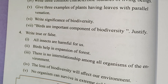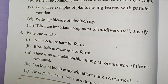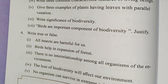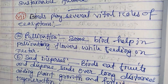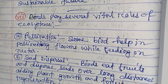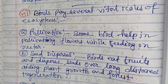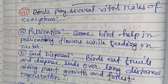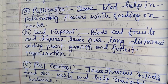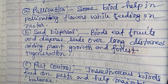Number seven: Birds are an important component of biodiversity. Birds play several vital roles in the ecosystem. Number one: Pollination — some birds help in pollinating flowers while feeding on nectar. Number two: Seed dispersal — birds eat fruits and disperse seeds over long distances, aiding plant growth and forest regeneration. Number three: Pest control — insectivorous birds feed on pests and help maintain a balance.